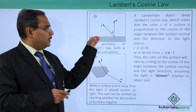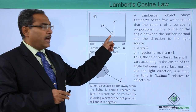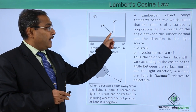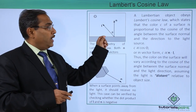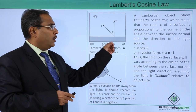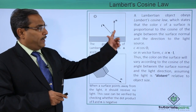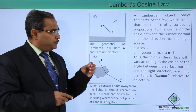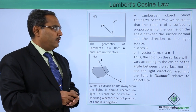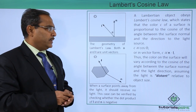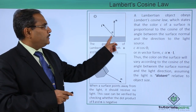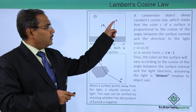Consider this surface and the direction of the light. Here we have the normal to the surface, and this is the respective angle between these two. Depending on this angle — the cosine of this angle — the color of the surface will be decided. The Lambertian object obeys Lambert's cosine law: the color c of a surface is proportional to the cosine of the angle between the surface normal and the direction to the light source.